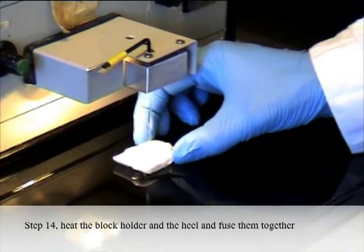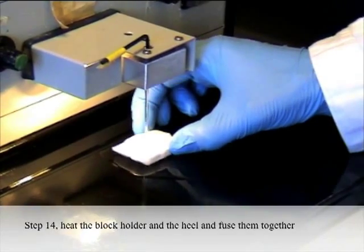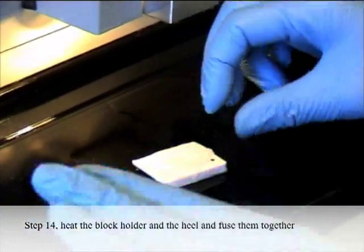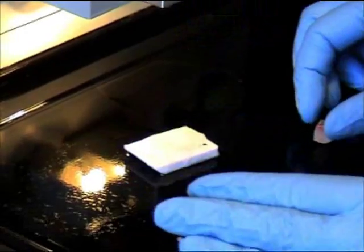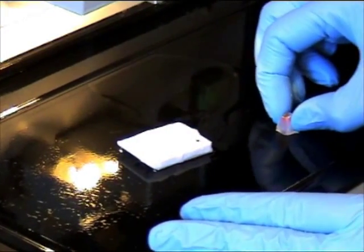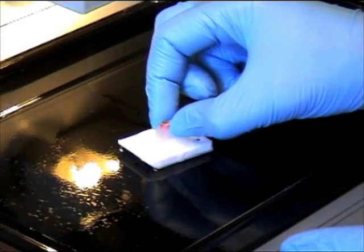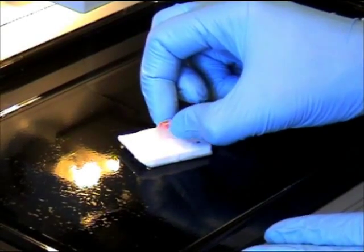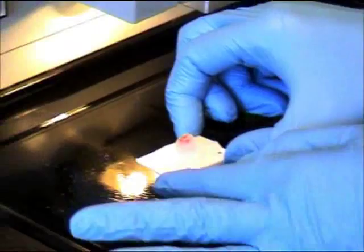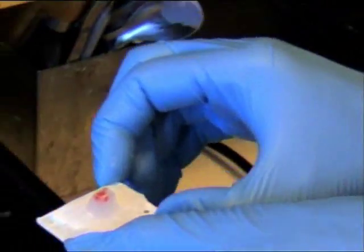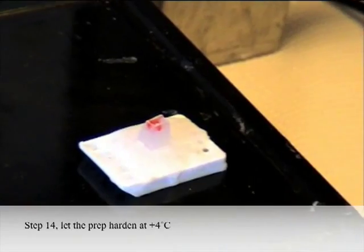Step 14: Heat the block holder and the heel and fuse them together. Let the prep harden at 4 degrees centigrade.